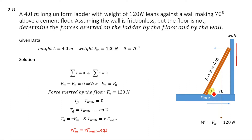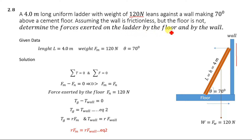The angle between the ladder and the floor is 70 degrees. The weight of the ladder is given as 120 Newton. The wall is frictionless, but the floor is not frictionless, and that friction is keeping the ladder in static equilibrium. We need to determine the forces exerted on the ladder by the floor and by the wall.